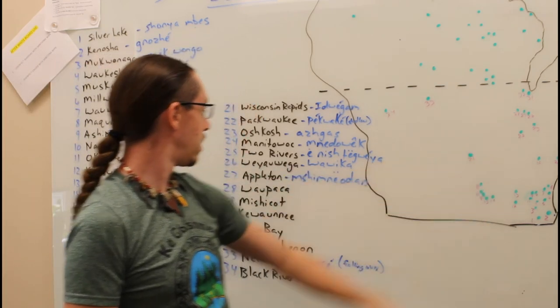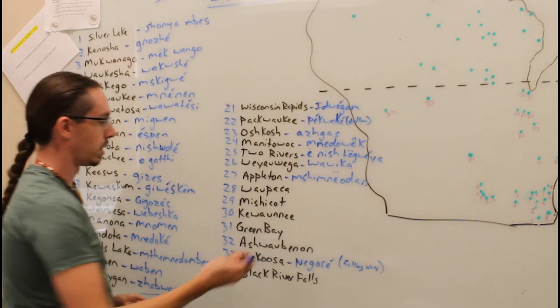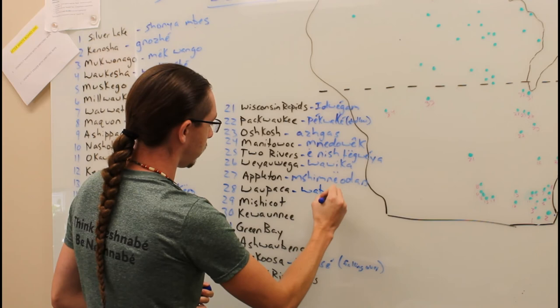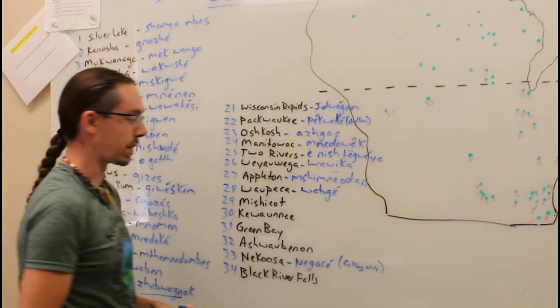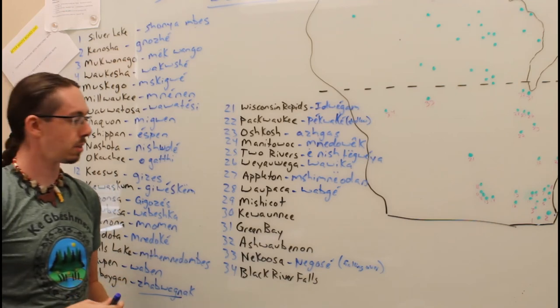Right next there, you have Waupaca, Wisconsin. That is actually Wawika, which means he or she sees things.